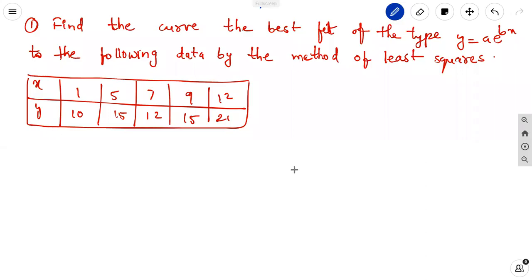Let us discuss a problem on exponential form of the equation. It can be solved by the method of least squares to fit a curve. The problem is find the curve the best fit of the type y equal to a e power bx to the following data by the method of least squares.